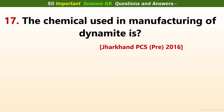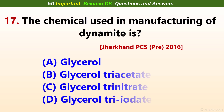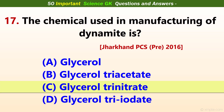The chemical used in the manufacturing of dynamite is? Answer D: Glycerol trinitrate.